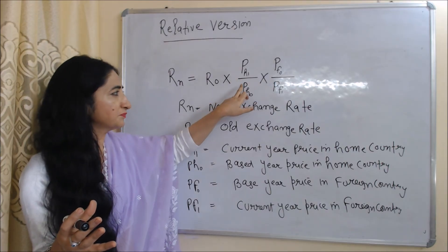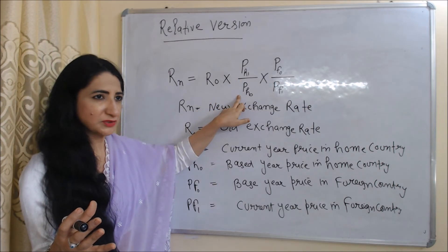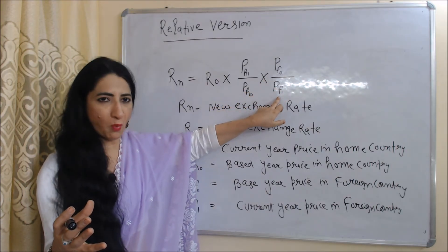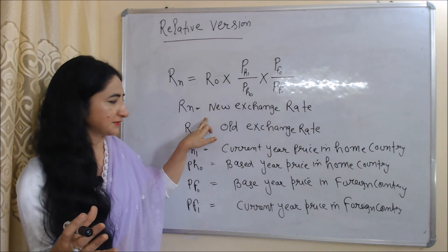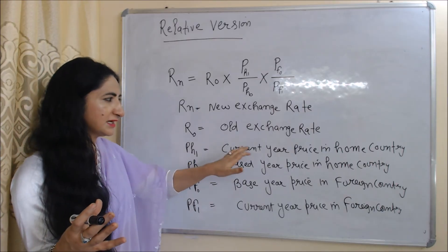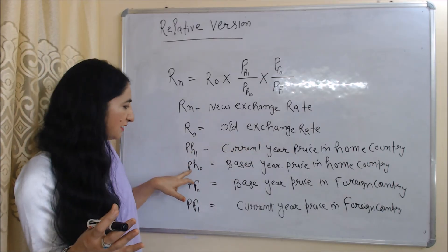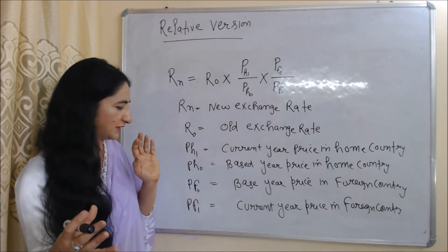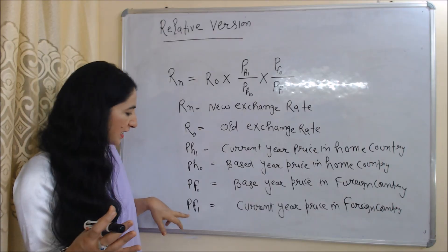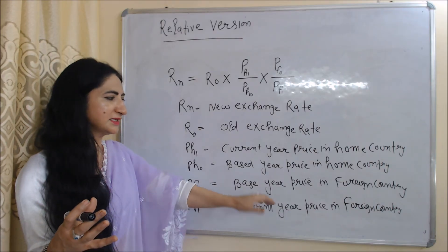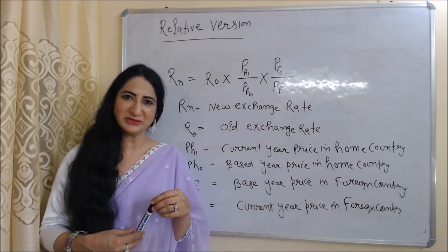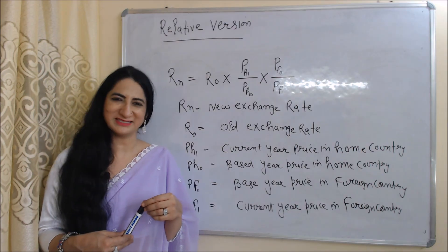The formula for calculating exchange rate with the relative version is: RN equals R0 multiplied by (PH1 divided by PH0) multiplied by (PF0 divided by PF1). Here RN is the new exchange rate, R0 is the old exchange rate, PH1 is the current year price in the home country, PH0 is the base year price in the home country, PF0 is the base year price in the foreign country, and PF1 is the current year price in the foreign country. This is all about Purchasing Power Parity theory. Thank you so much for watching.